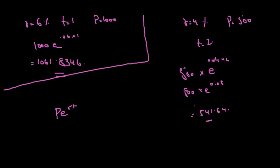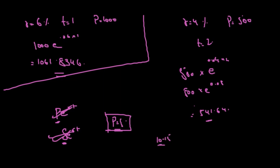This is how we calculate continuous compounding using the formula Pe^(rt). It is also denoted as Se^(rt), where S is the spot price — so P equals S. You can remember the formula either way; both are correct. You will be getting at least 10 to 15 questions on this, so practice continuous compounding rigorously.